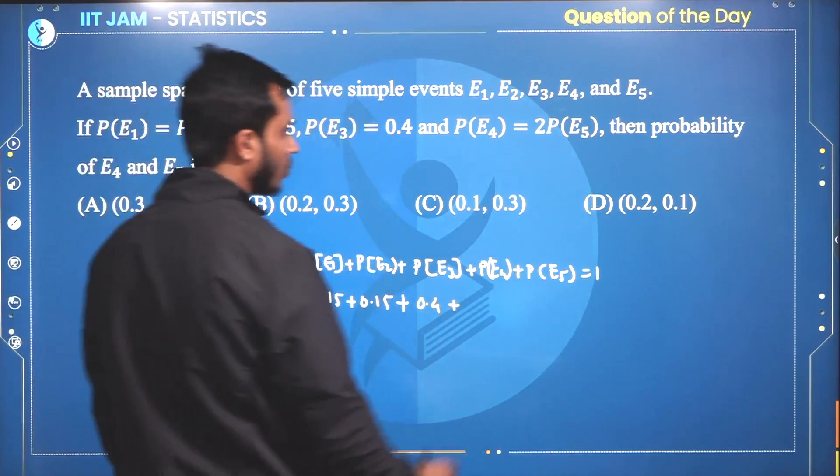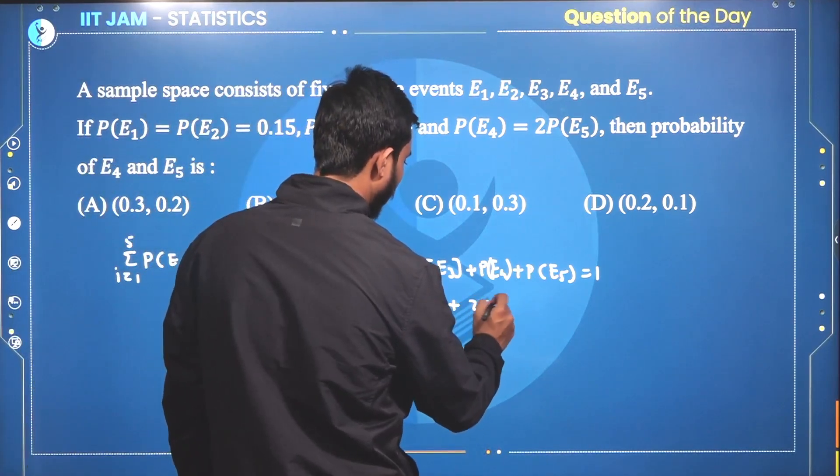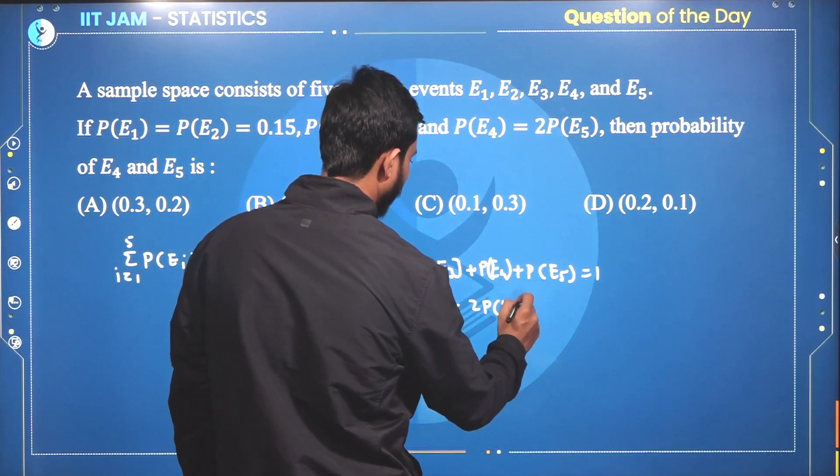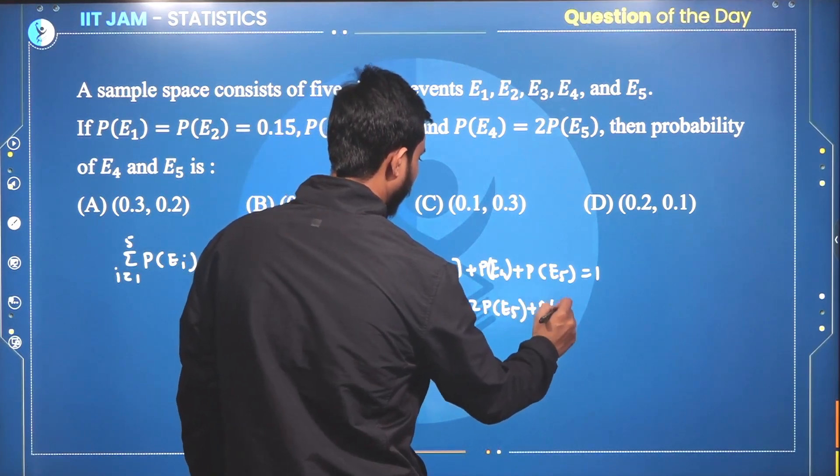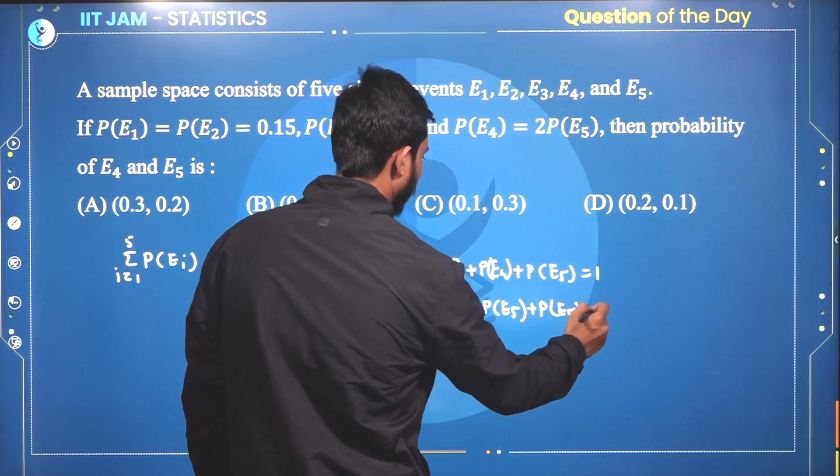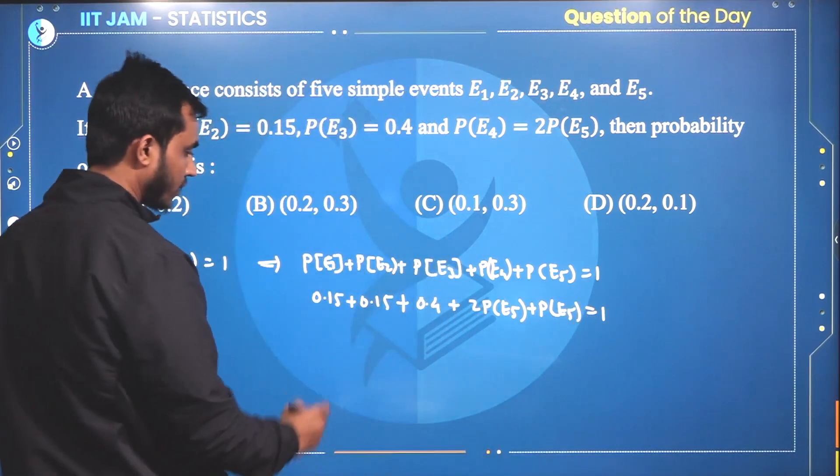Probability of E4 is two times the probability of E5, plus probability of E5.